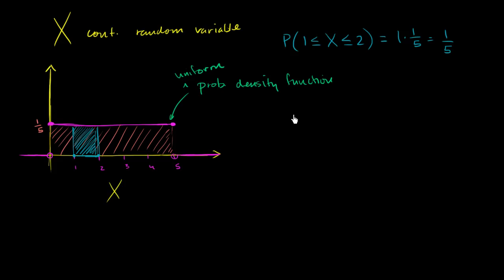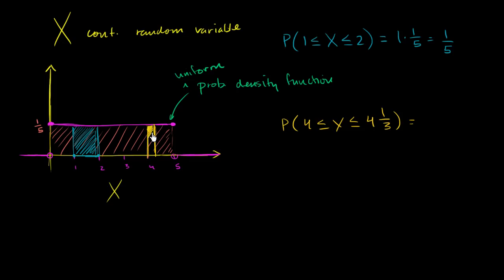Let's think about another one. What is the probability that the random variable is greater than or equal to 4 and less than or equal to 4 and 1/3? The range is from 4 to 4⅓, which is right about there. What we care about is the area under the curve in this range — it's a rectangle. The base between 4 and 4⅓ is a distance of 1/3, and the height is 1/5, so 1/3 times 1/5 equals 1/15.